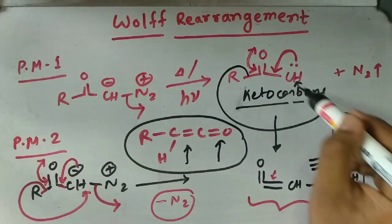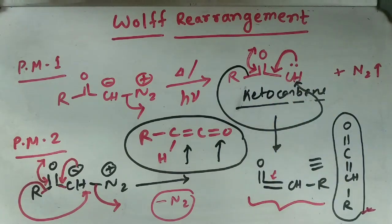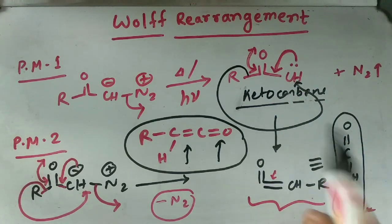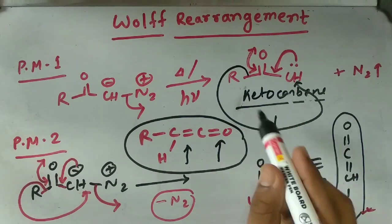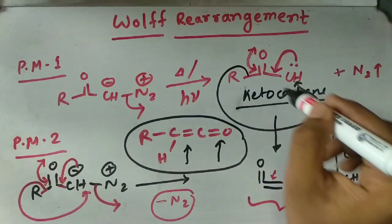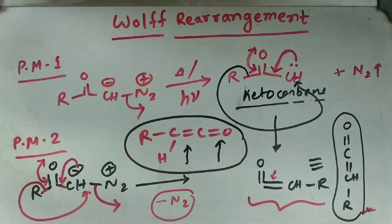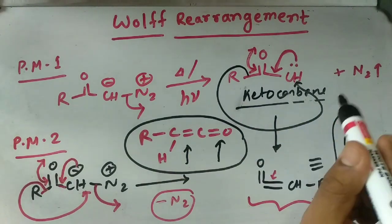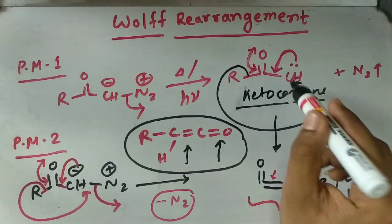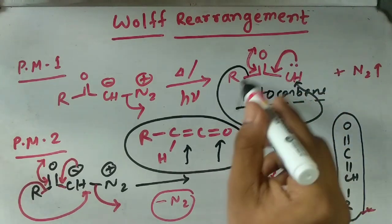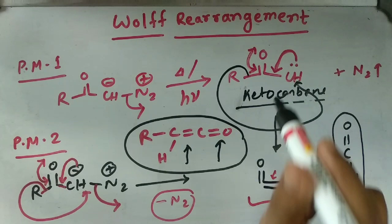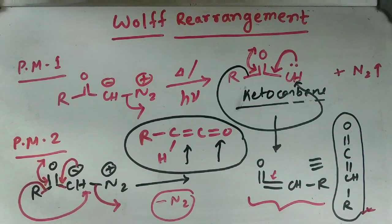In this rearrangement, the R group migrates from one carbon atom to the adjacent carbon atom — this 1,2-migration is called intramolecular migration. It is intramolecular because the R group migrates within the same molecule, within the same connected system. That is why it is called intramolecular migration, or intramolecular Wolff rearrangement, or simply Wolff rearrangement in general.